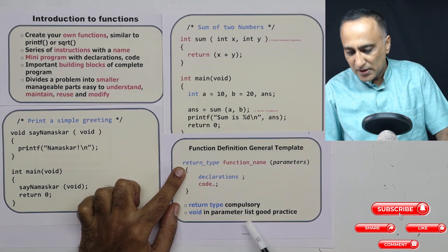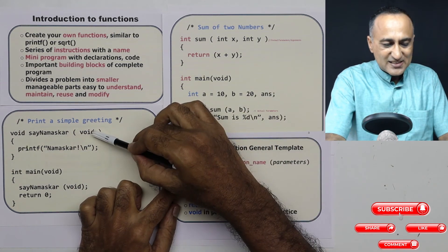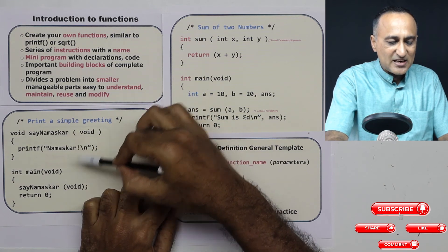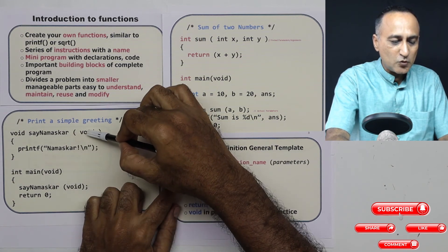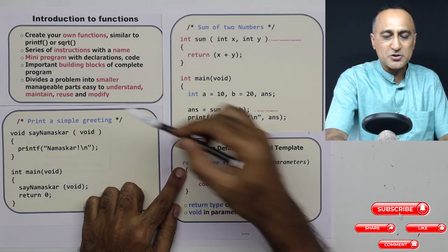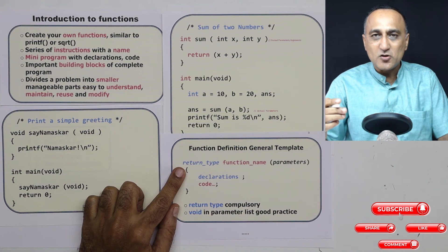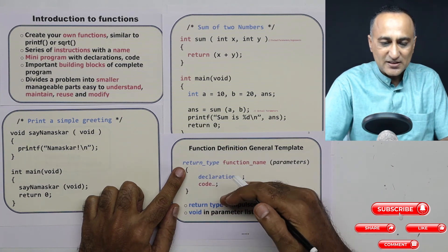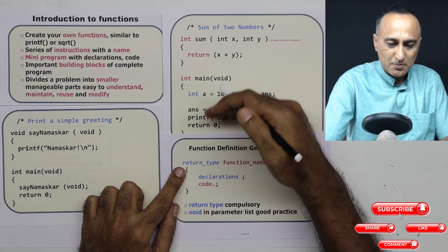Void in parameters is a good practice, like this where I am not sending any parameters from main to any other function. It is good practice to indicate by void, though void is optional. This indicates that there is no data communication from the main to this.